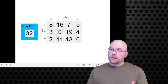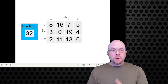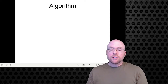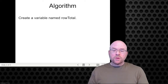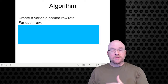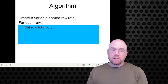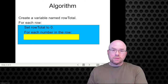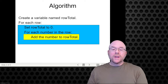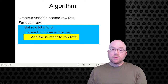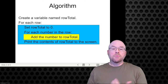Now that we understand the problem and how it generally works, let's come up with an algorithm. What does our algorithm look like? We create a variable named row total. Then for each row, we set row total to 0, go through each number in the row — each column — and add that number to row total. Once we finish, we have the total of that row, and for our demo we simply print the contents of row total to the screen. That's our algorithm — something that sounds more complicated than it is.